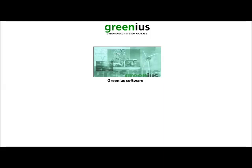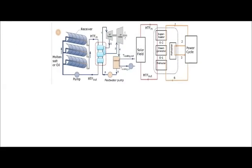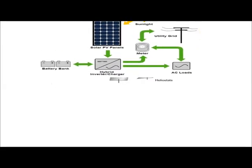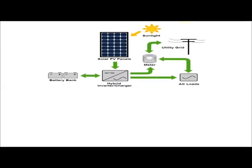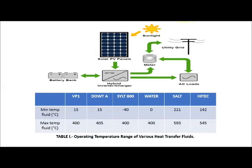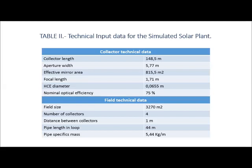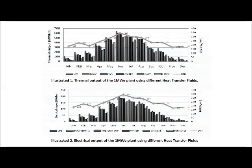TRNSYS is a simulation tool for the calculation and analysis of renewable power projects such as solar thermal parabolic trough power plants, solar thermal power towers, and photovoltaic systems, among others. The following table shows the operating temperature range of various heat transfer fluids. In this study, a one megawatt plant based on parabolic trough technology has been built using six parabolic trough collectors with two receivers. The technical data of the field are summarized in Table 2. During the simulation, all the parameters and inputs were fixed except the working fluids, in order to find out the most sustainable ones to be used for small-scale parabolic trough plants.